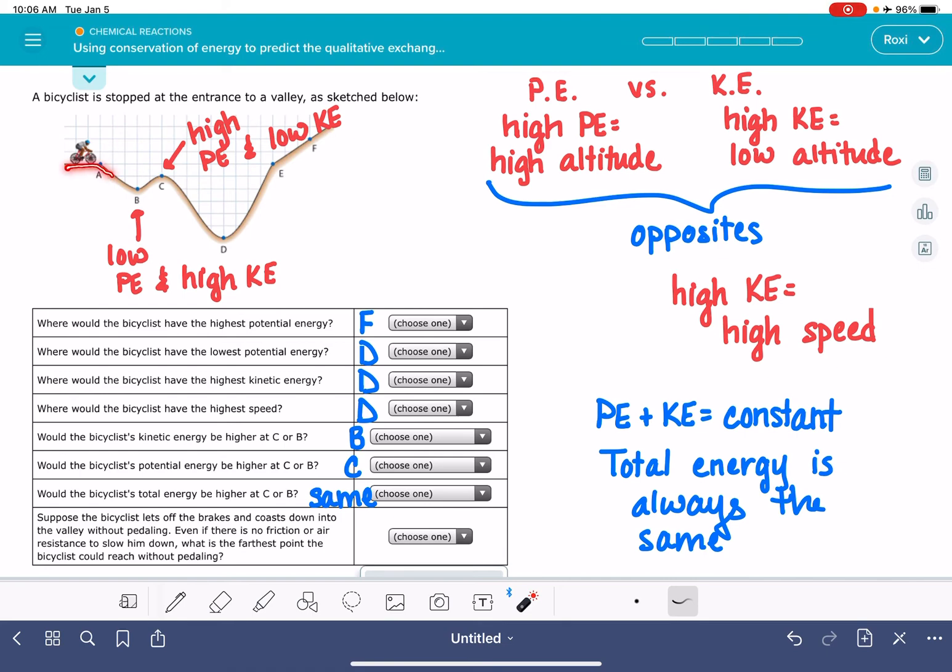But in a perfect world, this bicyclist should be able to get back up to the same altitude where he or she started. So in a perfect world, the bicyclist should be able to coast all the way to point E. And it's asking us for this perfect world scenario. So there is a walkthrough of this particular Alex problem.